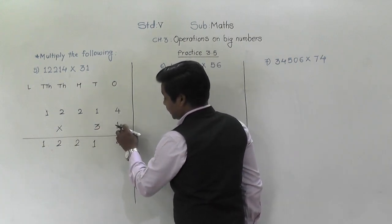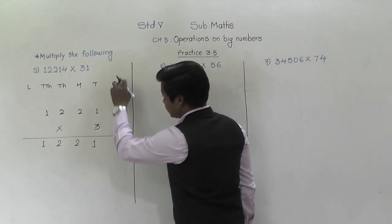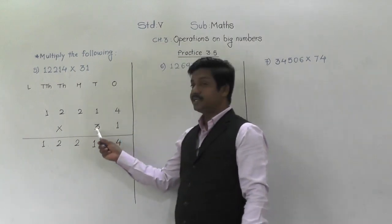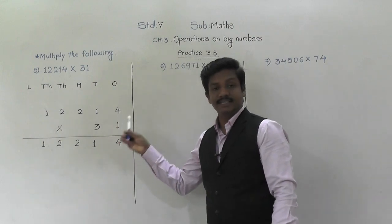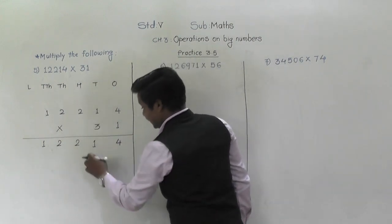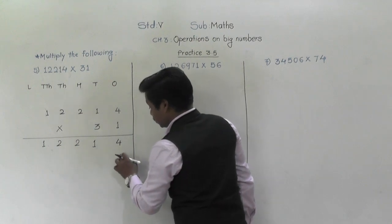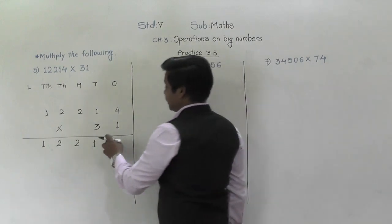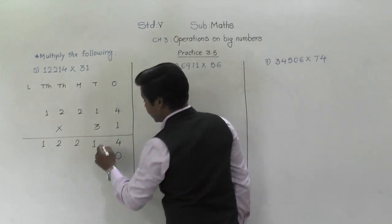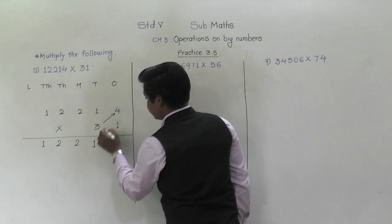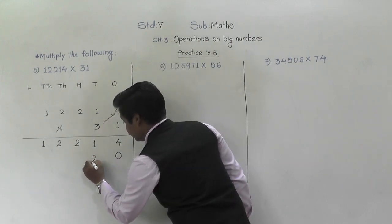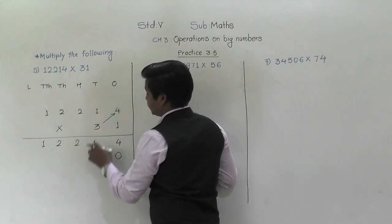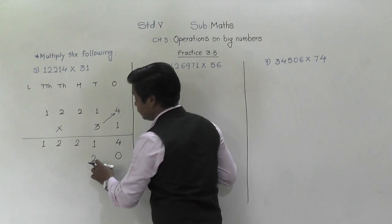Pay attention: when we multiply by the ones place digit, we start writing its answer from the ones place. But when we multiply by the tens place digit, we have to write its answer starting from the tens place — so at the ones place we put zero. Let's multiply by three. Three fours are twelve — two will come down and one will be carried to the tens place.